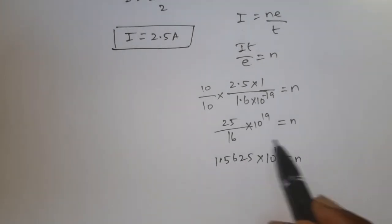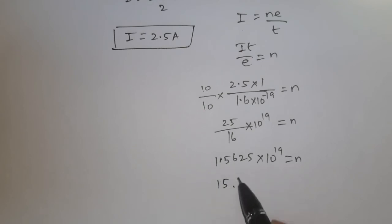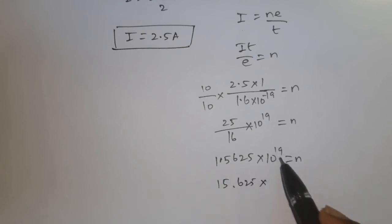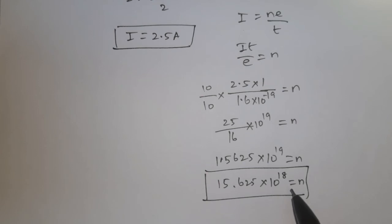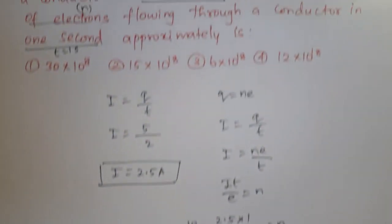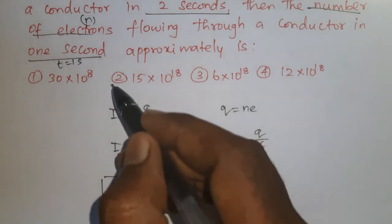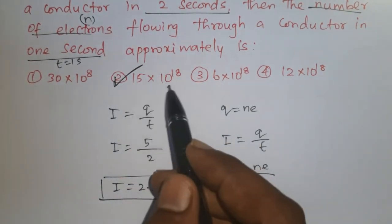So N ≈ 15.625×10⁻¹⁸ electrons. The question asks approximately, so the answer is approximately 15×10¹⁸ electrons. The correct option is the second one: 15×10¹⁸ electrons.